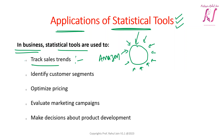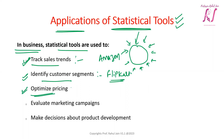Statistical tools can also be used for identifying customer segments. For instance, with Flipkart, we can easily identify customer segments using statistical tools to determine which group of customers is purchasing which kinds of products. A third application is optimizing pricing — when demand is high, prices are higher; when demand is low, prices are lower.